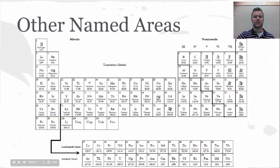So, other named regions on the periodic table, specifically, again, a reminder of the transition metals. And then the lanthanide series and the actinide series along the bottom. And don't forget, hydrogen, even though it's chilling out by the metals, is actually a non-metal.